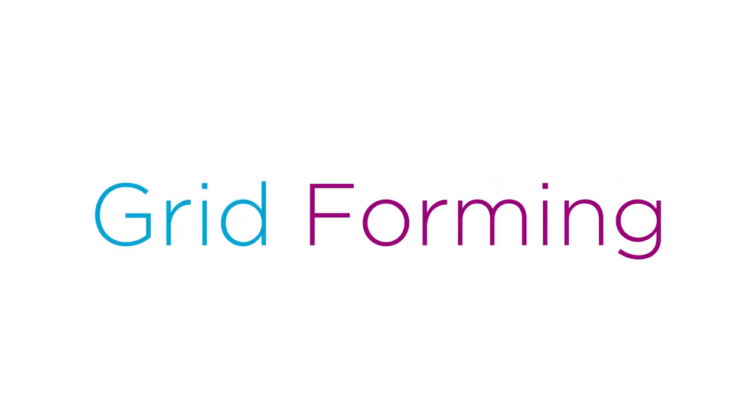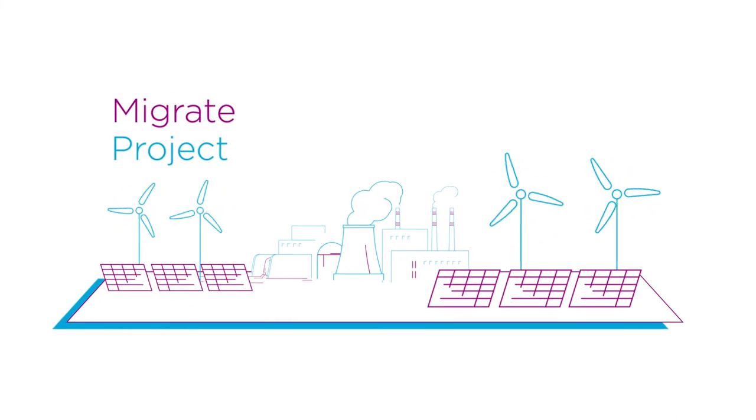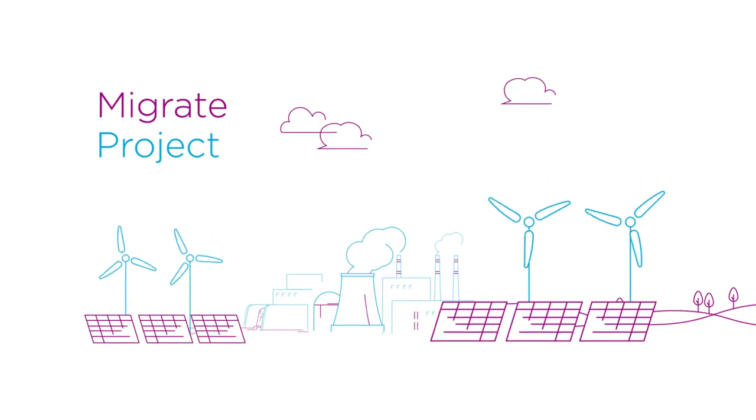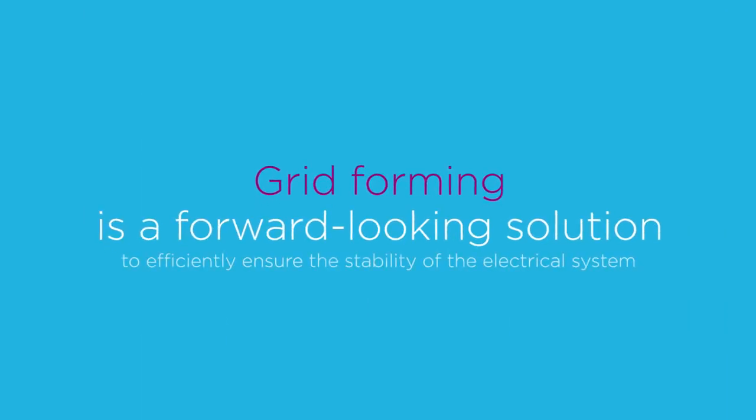This solution is called grid forming. Today it's being developed and tested on reduced sized hardware in the European Migrate project. Amprion will equip new power electronics units with this capability. And at Amprion we think that it's a real solution for the future.